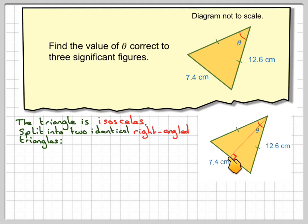So this point here will be the midpoint on this line, so this will be half of 7.4 which is 3.7, and this angle here will be the angle theta divided by two, half of whatever theta is.